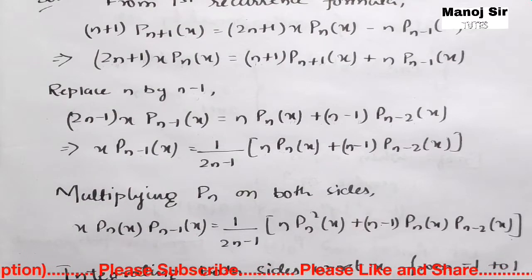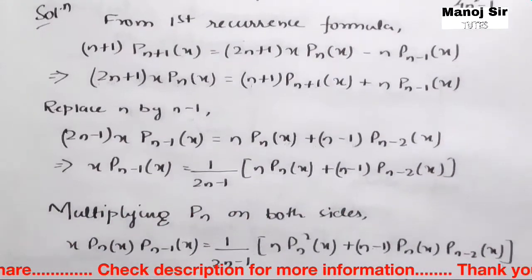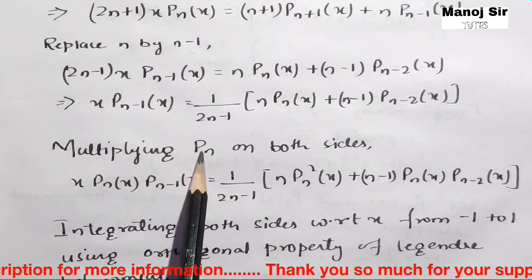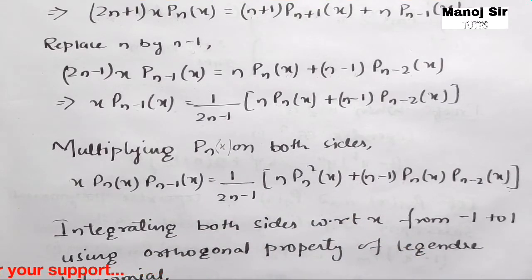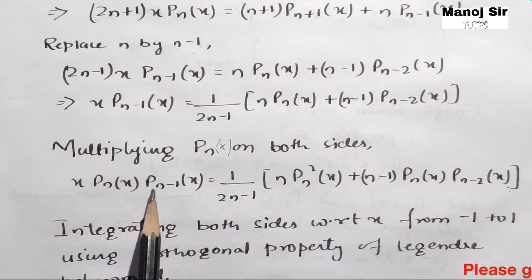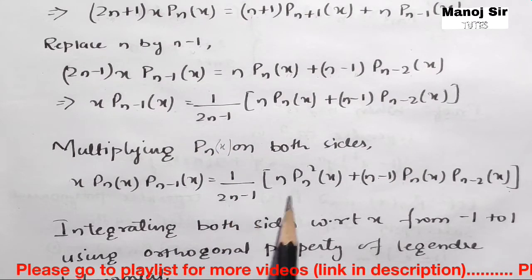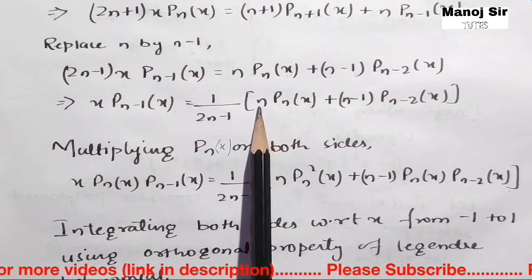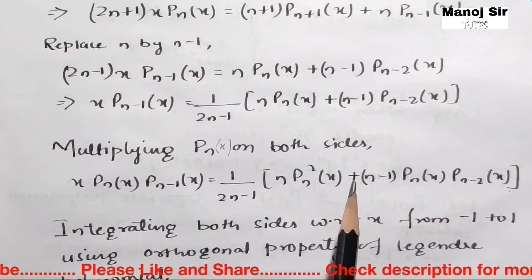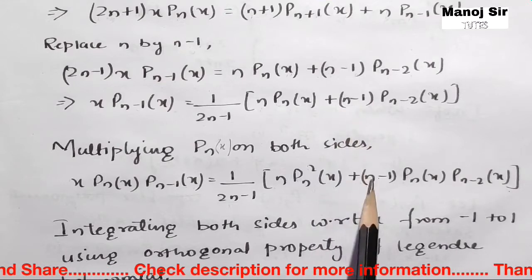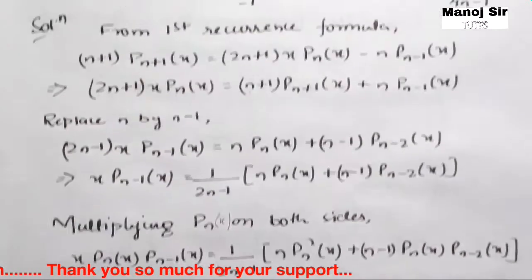In the question, we need x·Pₙ(x)·Pₙ₋₁(x), but Pₙ(x) is absent in our expression. So we multiply both sides by Pₙ(x). The left side becomes x·Pₙ(x)·Pₙ₋₁(x). The right side becomes 1/(2n−1) · [n·Pₙ²(x) + (n−1)·Pₙ(x)·Pₙ₋₂(x)].